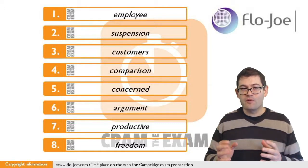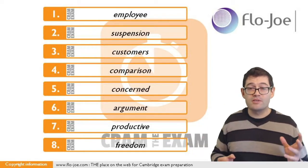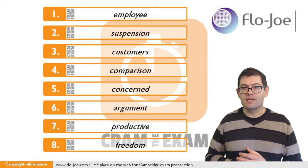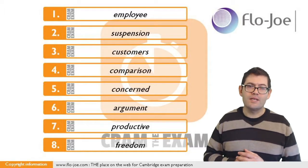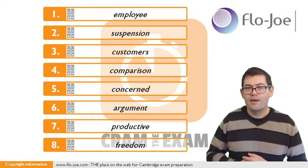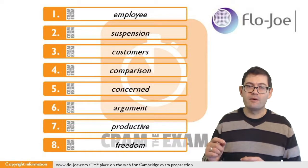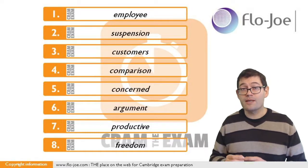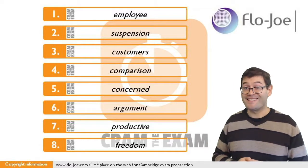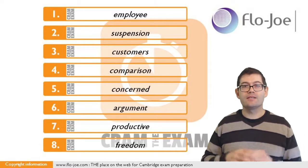Question number six. Right before the gap we've got a plural possessive pronoun. Whether plural or singular, a possessive pronoun means you're going to need a noun. But which noun — singular or plural? We have to look after the gap at the verb, always bearing in mind subject-verb agreement. Here the verb is 'is', which means we need a singular noun. The answer is: argument.